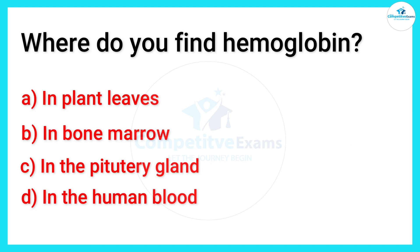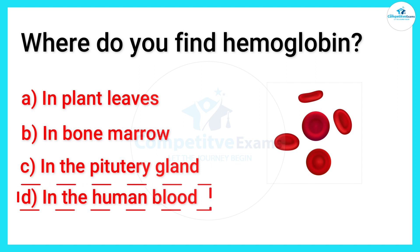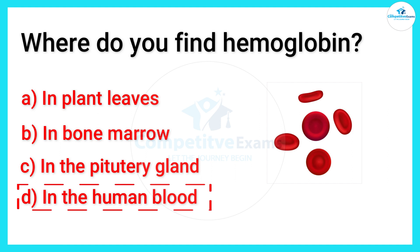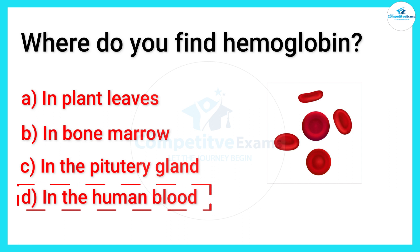Hemoglobin is found in human blood. The correct answer is D. Friends, hemoglobin is a protein in your red blood cells that carries oxygen to your body's organs and tissues, and transports carbon dioxide from your organs back to the lungs.